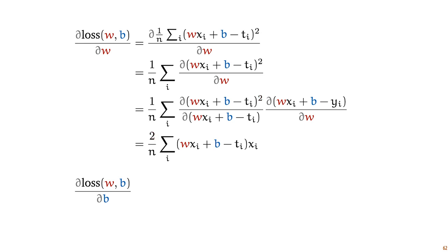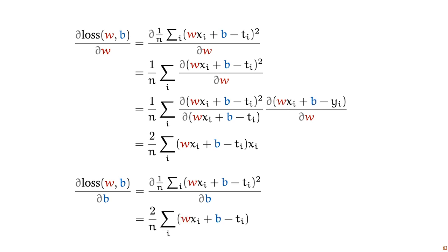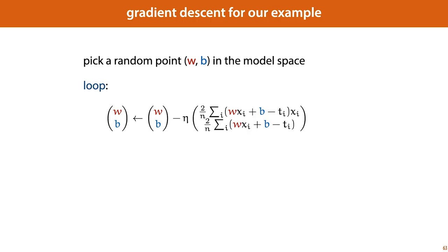For the second partial derivative, we follow the same principle: fill in the loss function and follow the same derivation. The only difference is that after the chain rule, in the second factor we are taking the derivative not with respect to w, but with respect to b. So the middle term remains, the b cancels out, and we are essentially multiplying by 1, which means xi disappears from the result. So with these two partial derivatives, we can now work out the gradient descent algorithm for our example.